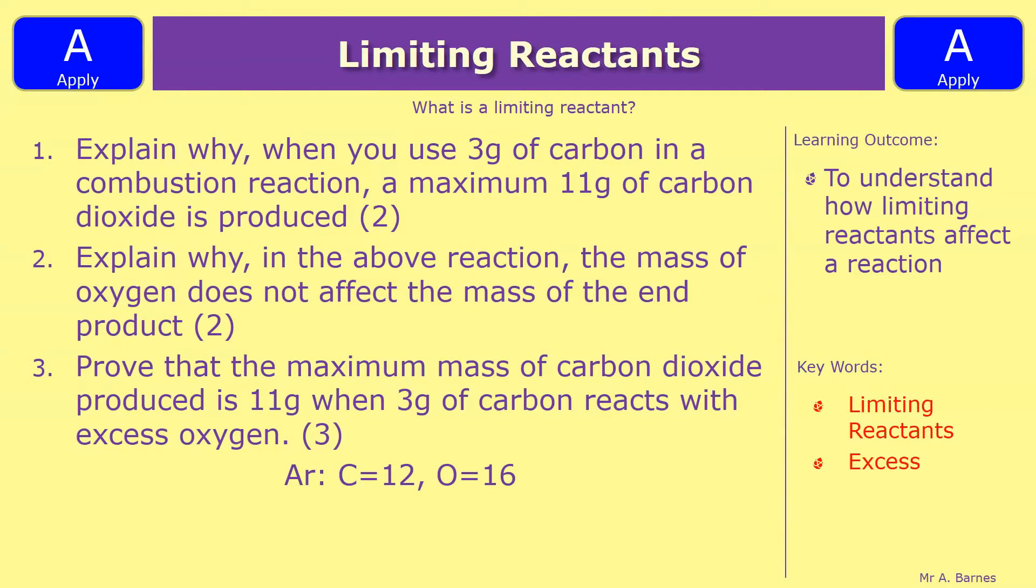Right, we have three questions to finish off this video. The first one: explain why when you use 3g of carbon in a combustion reaction, a maximum 11g of carbon dioxide is produced. Question two: explain why in the above reaction the mass of oxygen does not affect the mass of the end product. And then number three: prove that the maximum mass of carbon dioxide produced is 11g when 3g of carbon reacts with excess oxygen.